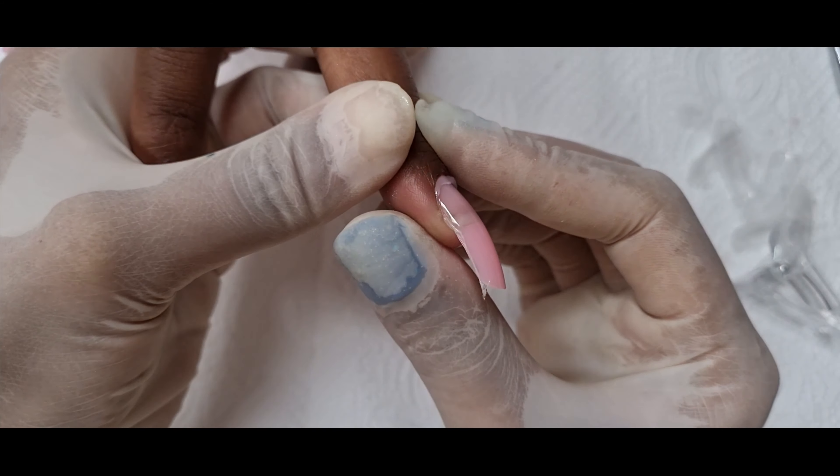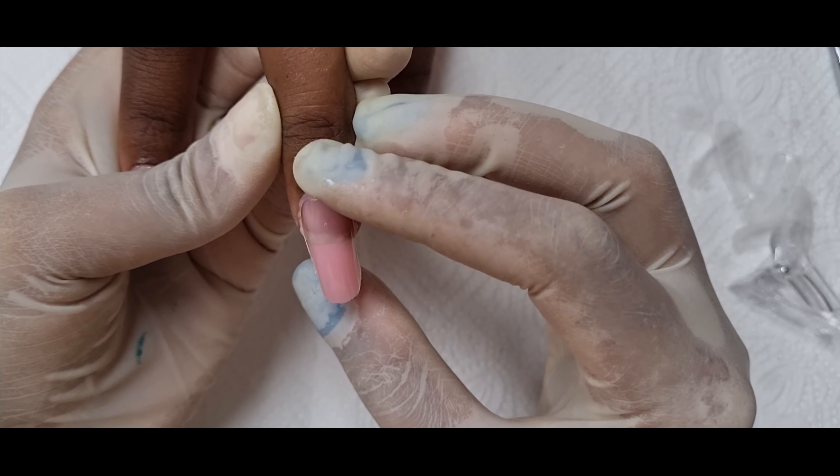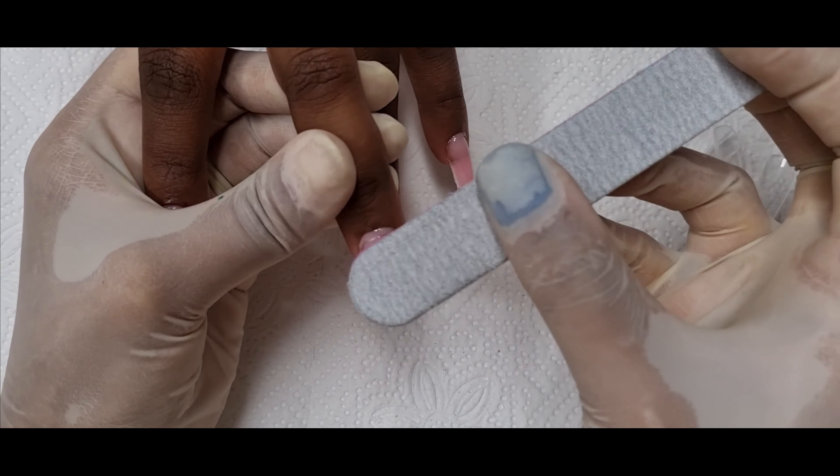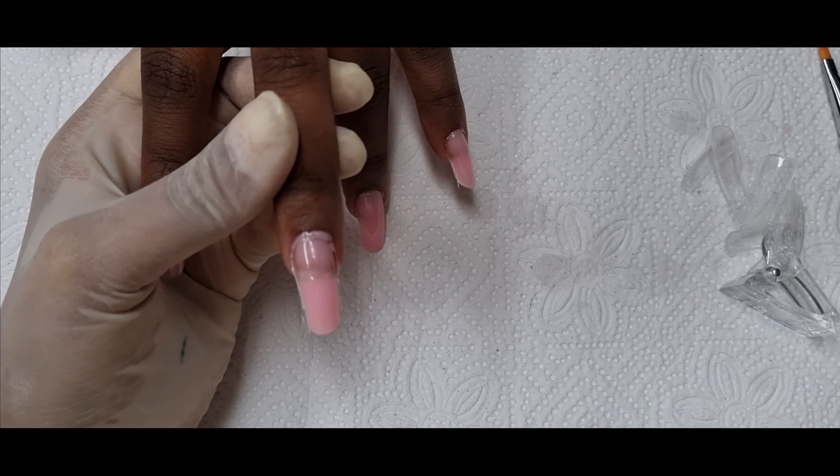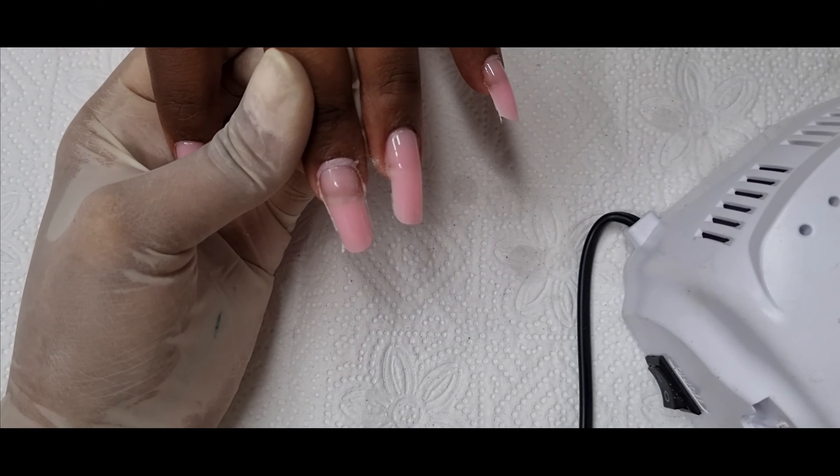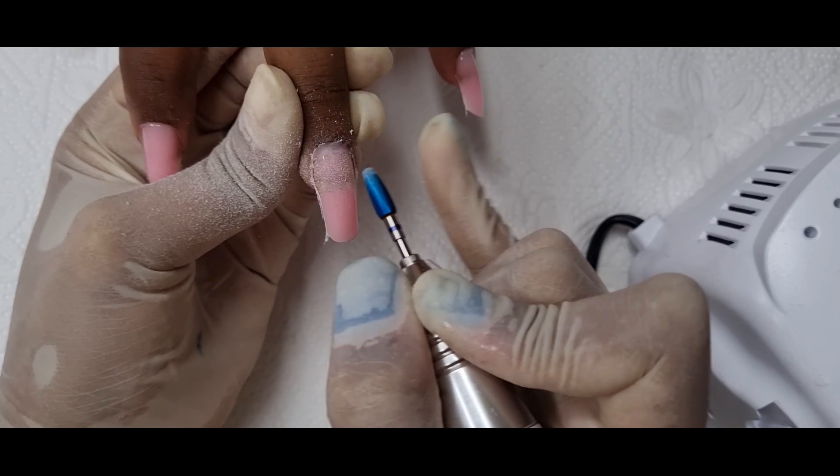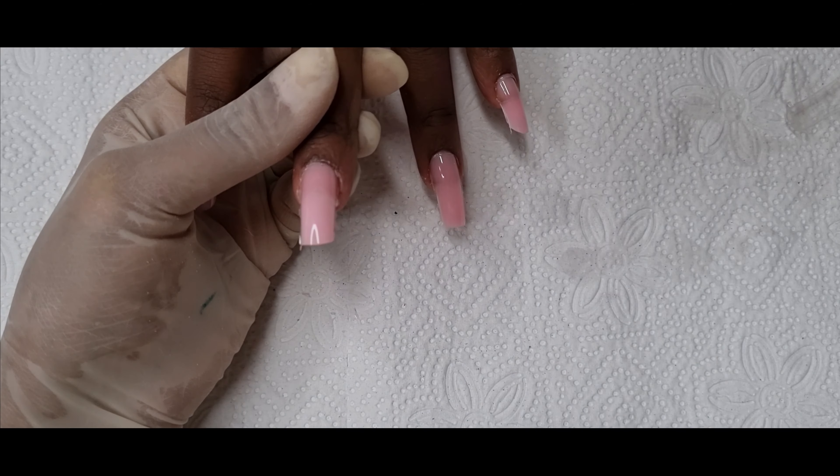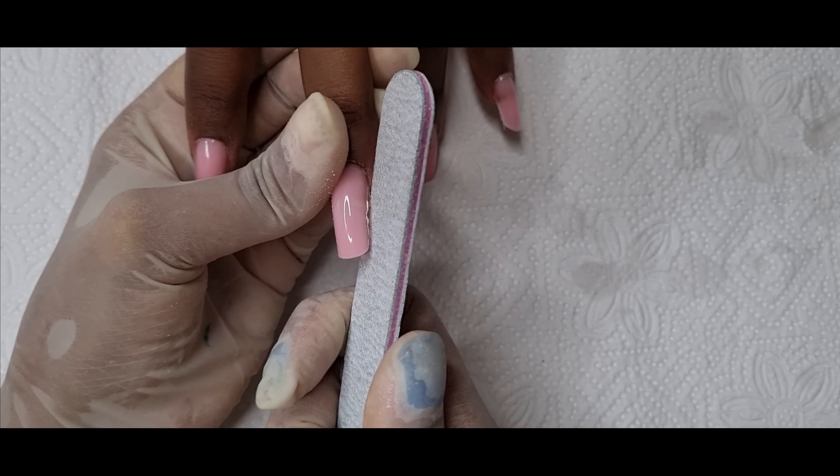Now as you can see this nail is super thin and it gets very difficult to clean off any poly gel on the cuticles with a nail file. So I decided to go in with my safety bit to clean off all the poly gel by her cuticles. And once I fixed this nail I will go in with the shaping and filing with the nail file.